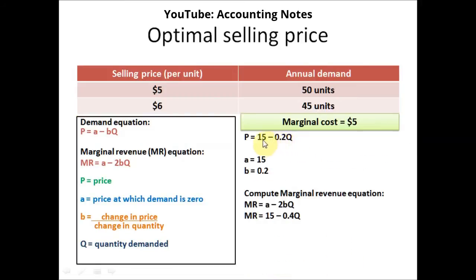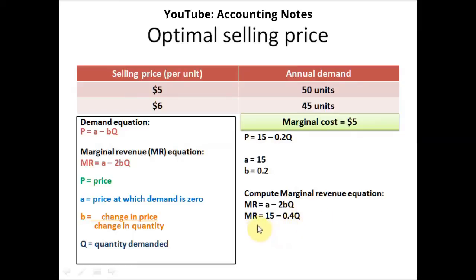Now that we have our demand equation, we need to find the marginal revenue equation, which is found by doubling the B coefficient from the demand equation. So MR equals 15 minus 2 times 0.2 times Q, which gives us 0.4Q. The marginal revenue equation is MR equals 15 minus 0.4Q.